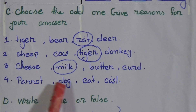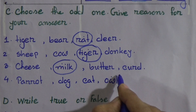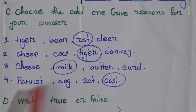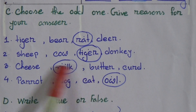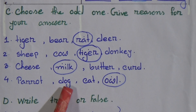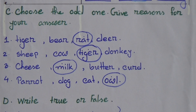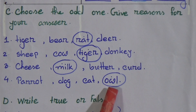Number 4: Parrot, dog, cat, owl. Which one is odd? Here, owl is odd. Why? Because parrot, dog and cat are pet animals — we keep them in our house, love them, and give them food. Owl is an external bird and is not a pet animal. That's why owl is the odd one.